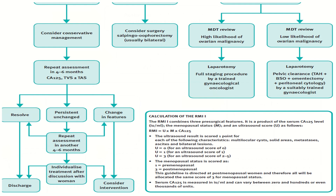In case of RMI less than 200 and low risk category, we do conservative management — repeat assessment in four to six months. If results are satisfactory, we discharge the patient. In case of persistence, we individualize treatment after discussion with the woman. In case of change in features, we consider intervention. In the high risk group, we consider bilateral salpingo-oophorectomy.